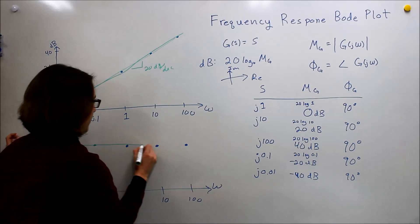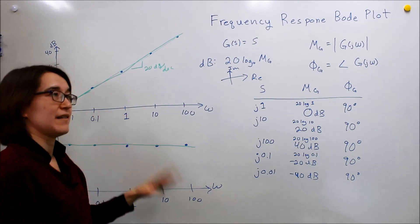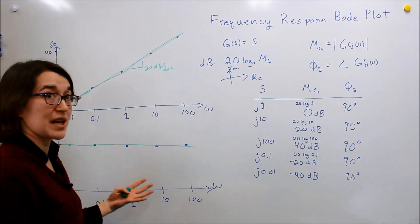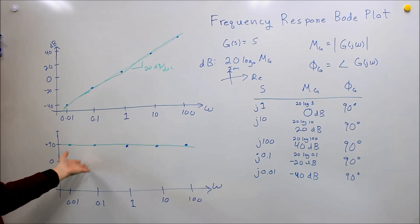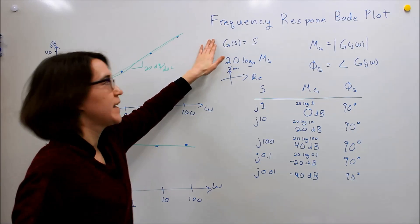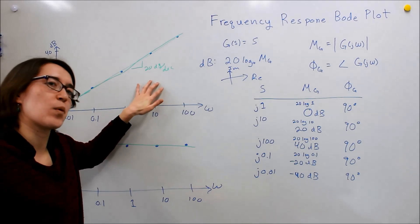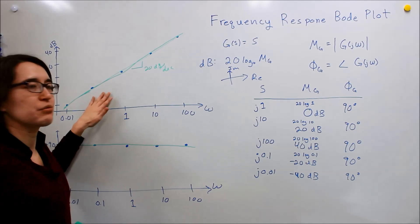This one is just straight 90 the whole way through. No matter what frequency you give me, if I plug it into our equation, it's always facing upward in the imaginary axis, so it's always 90 degrees. This is the basic Bode plot for this very simple function. This slope of 20 dB per decade will be important when we're looking at how poles affect the Bode plot.